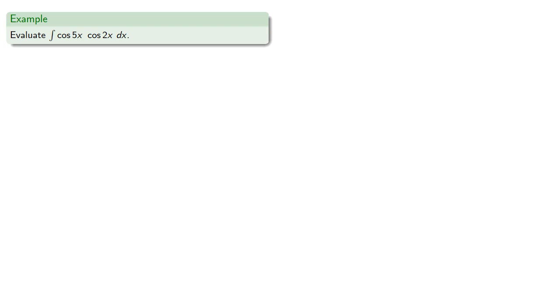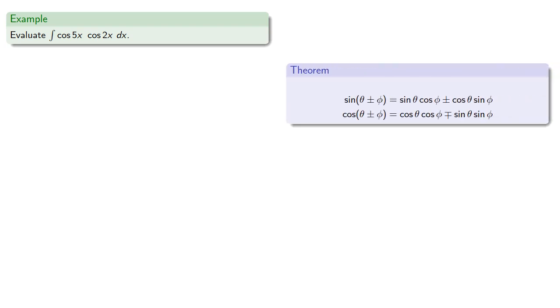What about a product of cosines? So we note that from our angle sum formulas, the product of cosines appears in the expansions of the cosine of a sum or difference. So cos 5x cos 2x would appear in the expansion of cos(5x + 2x) and also in the expansion cos(5x - 2x).